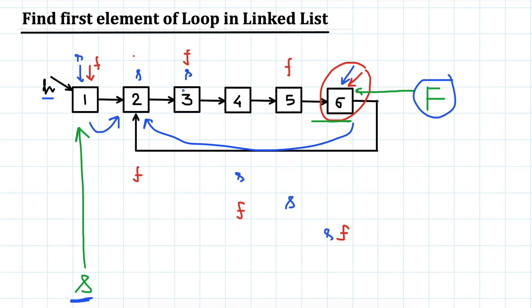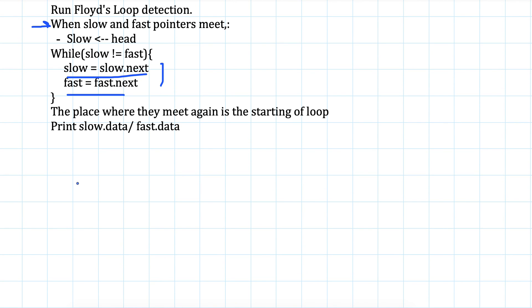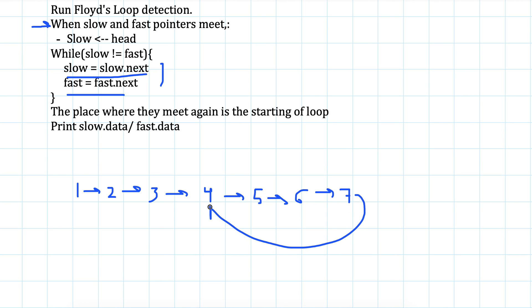Let's look at another example to make it more clear. Let's say node 7's next points to node 4, creating a loop. Now run the algorithm again.